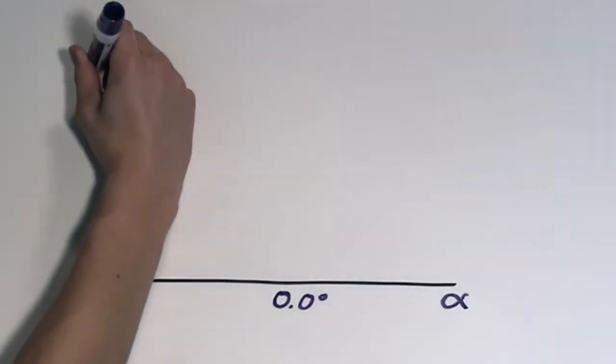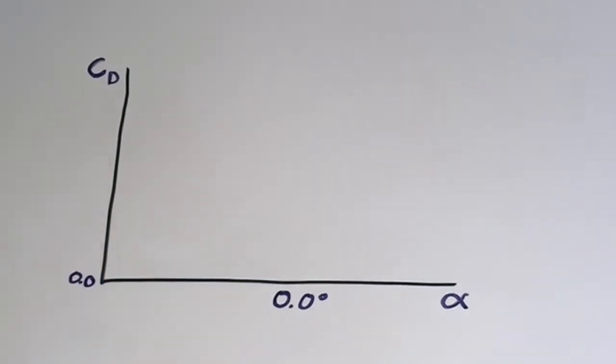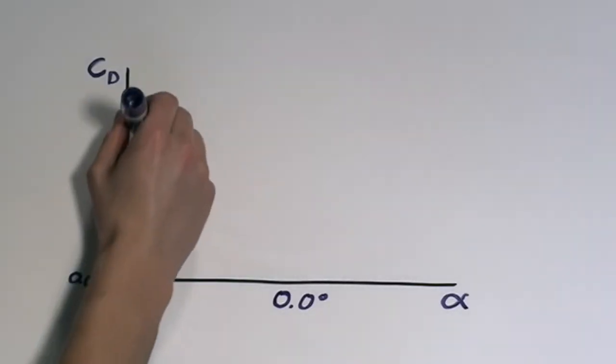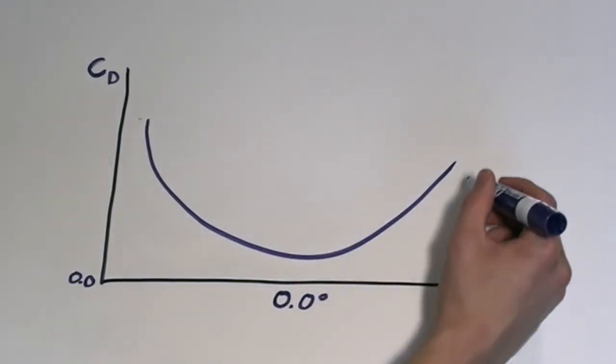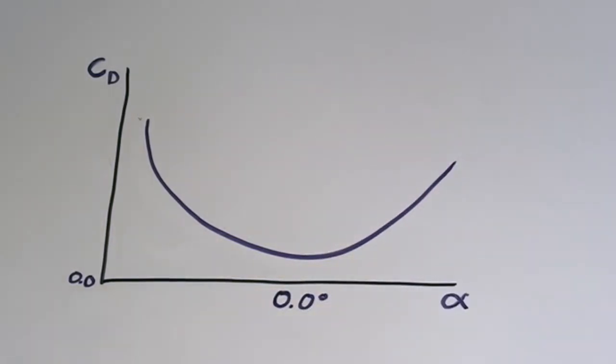The relationship between the angle of attack and the drag coefficient is parabolic. The further away from zero the angle of attack is, the greater the drag experienced by the airfoil will be. This is also consistent with our predictions, as the increasing angle of attack means that more of the surface will experience force from the oncoming flow.